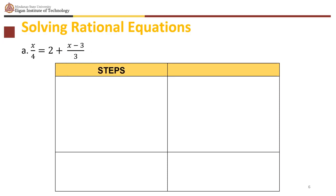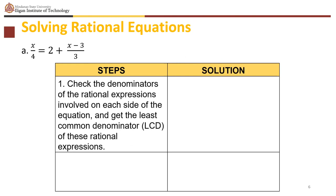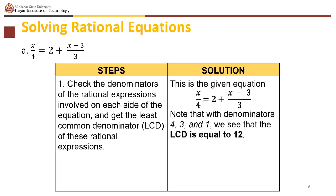Here are the steps. First, check the denominators and get the LCD. We have 4 and 3, so 4 times 3 gives an LCD of 12. Notice that the 2 here has a denominator equal to 1.